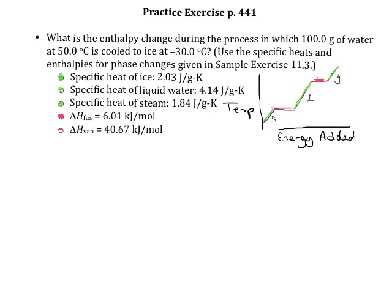Different information is needed depending on whether you're heating, cooling, or changing phase. The problem wants the enthalpy change when 100 grams of water starting at 50°C is cooled to ice at -30°C. That means we start on the liquid part of the curve, cool the liquid water down, undergo the phase change to ice, and then cool the ice to -30°C — so there are three steps to this calculation.